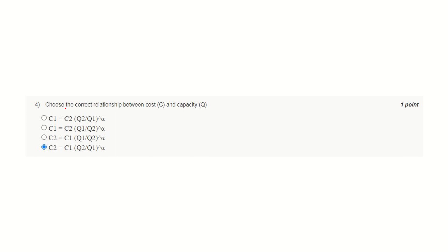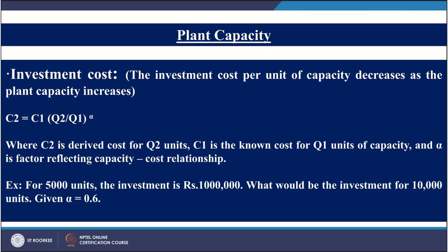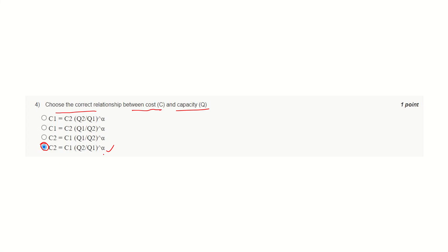Question number four. Choose the correct relation between cost and capacity. The correct answer is C equals this expression. Here you may note the expression where C2 stands for derived cost for Q2 units and C1 is the known cost for Q1 units of capacity, and alpha is a factor reflecting the capacity-cost relationship. So this is the correct answer.